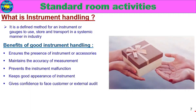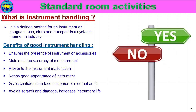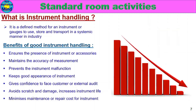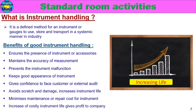Use Confidence to Face Customer or External Audit — if we regularly handle the instrument, we will have the confidence to face any audit. Avoid Scratch and Damage — this increases instrument life. Minimize Maintenance or Repair Cost — if we regularly maintain the instrument, major defects and maintenance costs are reduced. Increase of Costly Instrument Life — instruments like CMM and VMM cost lakhs; increasing their life is a profit to the company.